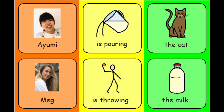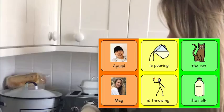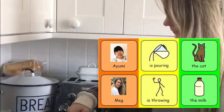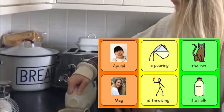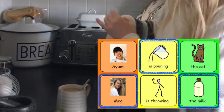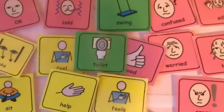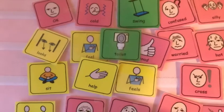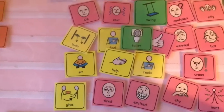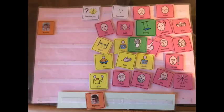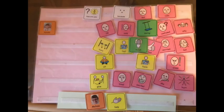Sometimes we'll use a grid like this one so that students can choose the right symbols to describe a picture. Let me show you. What's happening here? That's right — Meg is pouring the milk. Now at school we have lots of these lovely symbol boards so that we can really easily put together sentences like: Melissa, help, toilet.